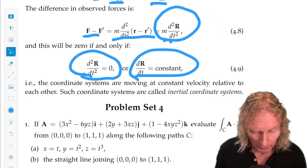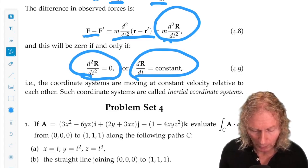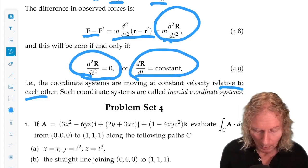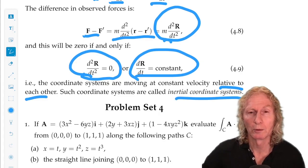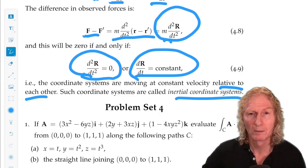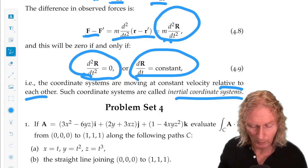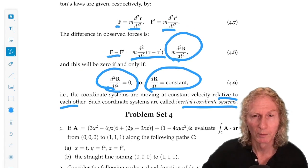So coordinate systems moving at constant velocity relative to each other, those are called inertial coordinate systems. And these are the coordinate systems in which Newton's laws are valid.